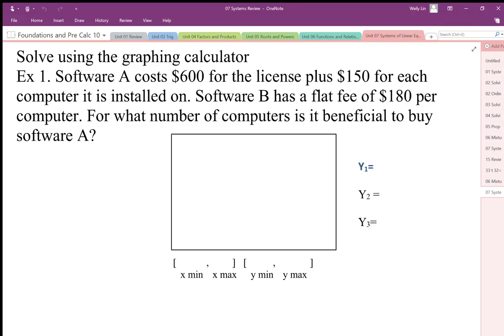In this case, Software A costs $600 for the license plus $150 for each computer it's installed on. Software B has a flat fee of $180 per computer. For what number of computers is it beneficial to buy Software A?